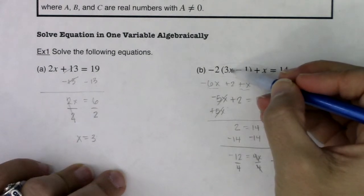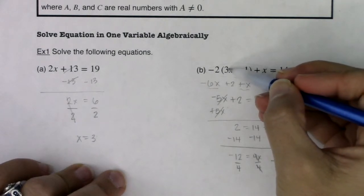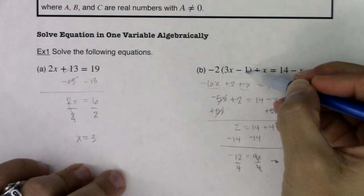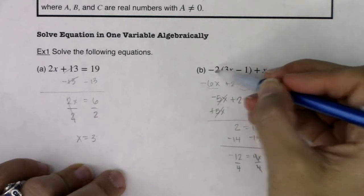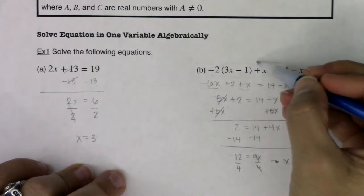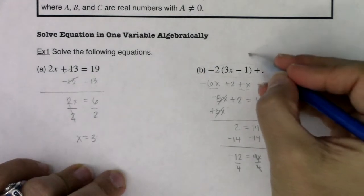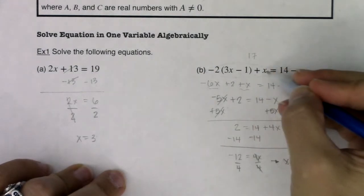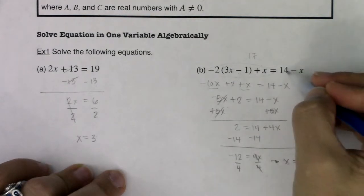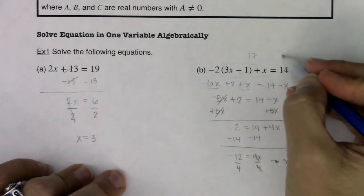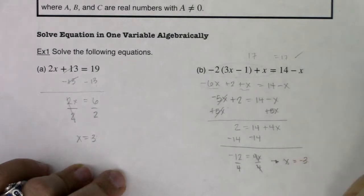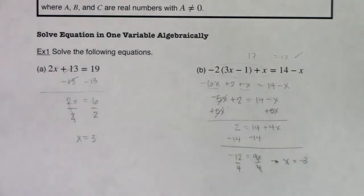I could plug this in and check. 3 times -3 is -9. -9 - 1 is -10. -10 times -2 is positive 20. 20 + (-3) is 17. So when I plug -3 into the left side of the equation, I get 17. 14 minus a -3 is 17. That checks out. I know my answer is correct. That's going to do it for example one.